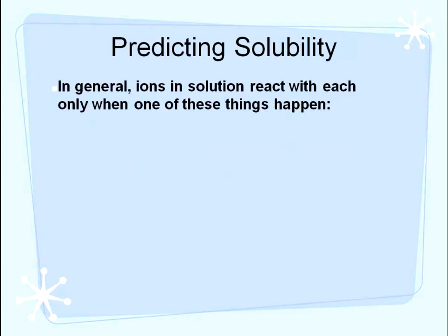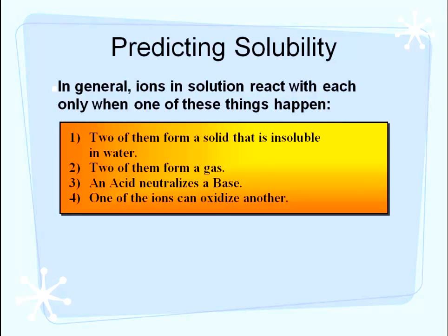In general, when ions are in solution and they react with each other, there are only a few things that can happen. First, two of the ions can form a solid that is insoluble in water — this is called a precipitate. Or you can have a gas form. You can also have an acid that neutralizes a base. Or you can have one of the ions oxidize another. Those are the four types of reactions that can occur when you have aqueous solutions mixed together.